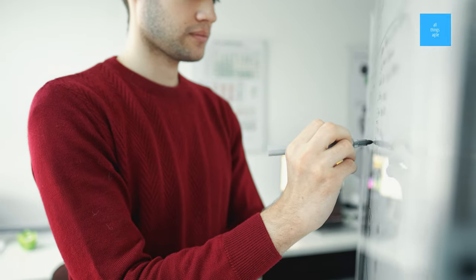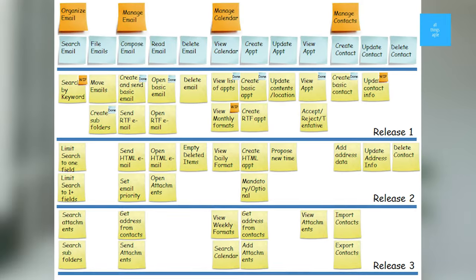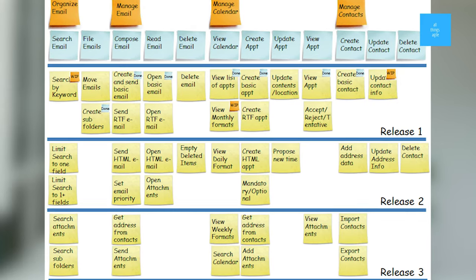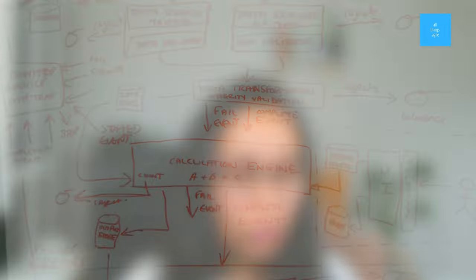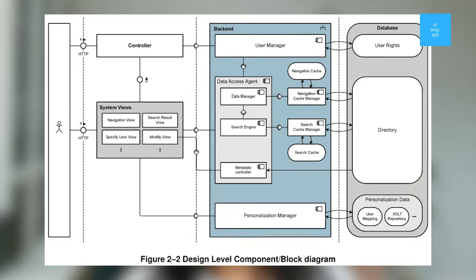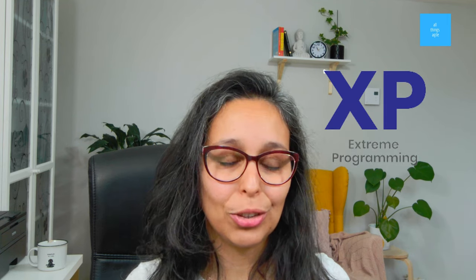Another way of seeing the Sprint Zero is as a planning iteration. You come up with a list of all prioritized features and stories with some estimates, a release plan that assigns the features and stories to the iterations, and a high-level application architecture — basically a general idea of how the whole thing would be implemented when put together.